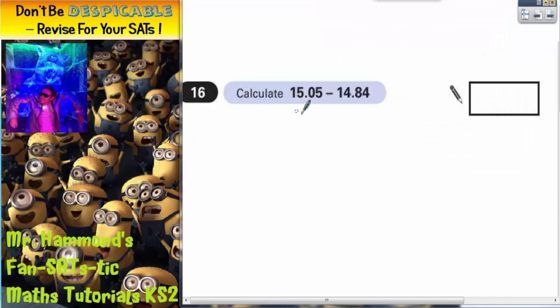Question 16. Calculate 15.05 take away 14.84.